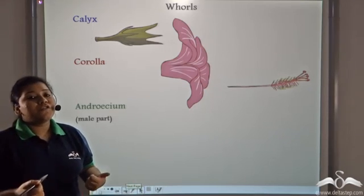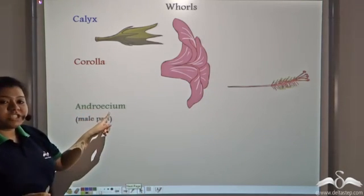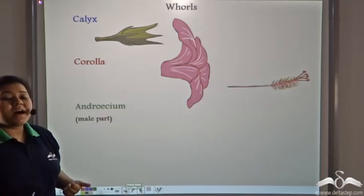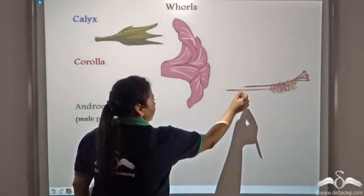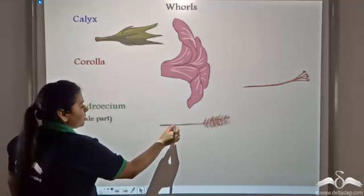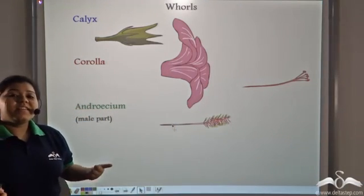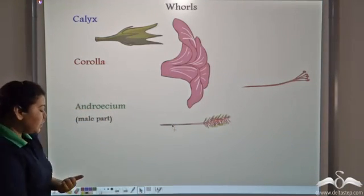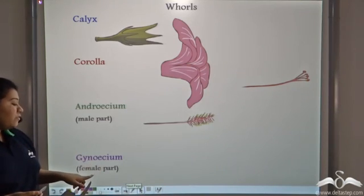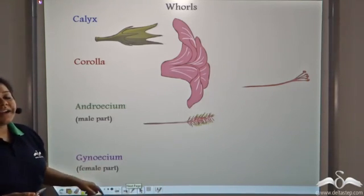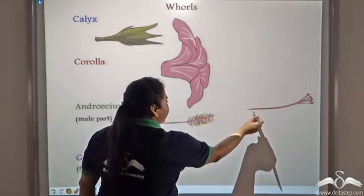The third whorl of a flower is known as androsium, which is the male part of the flower. This is the androsium. And finally, the innermost whorl is known as gynecium, which is the female part of the flower. This is the gynecium.